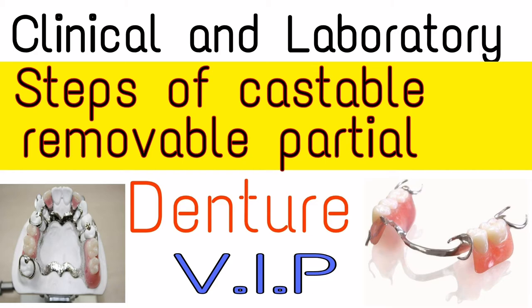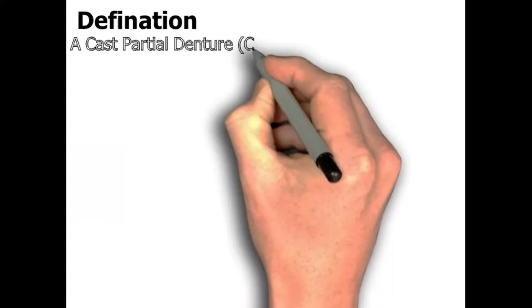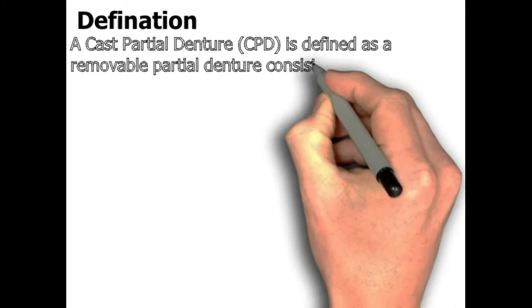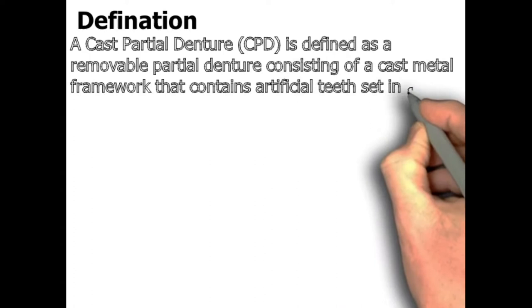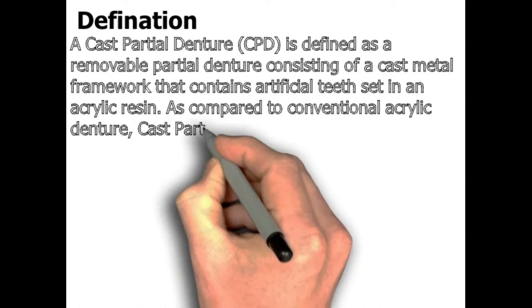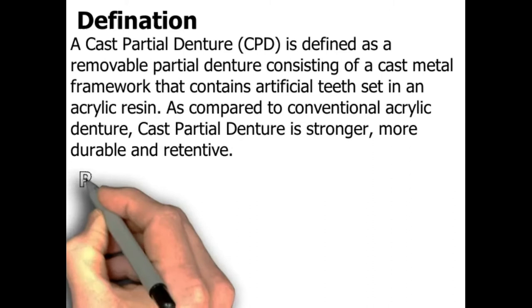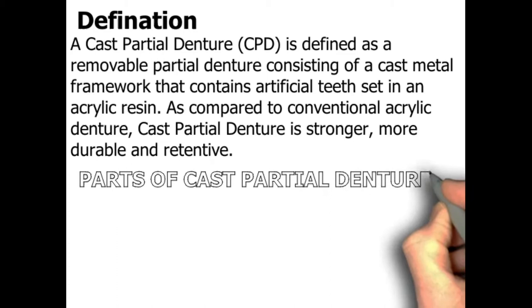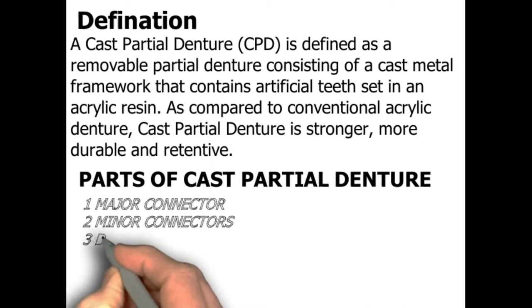Let's start. Definition: a cast partial denture is defined as a removable partial denture consisting of a cast metal framework that contains artificial teeth set in an acrylic resin. As compared to a conventional acrylic denture, a cast partial denture is stronger, more durable, and retentive.